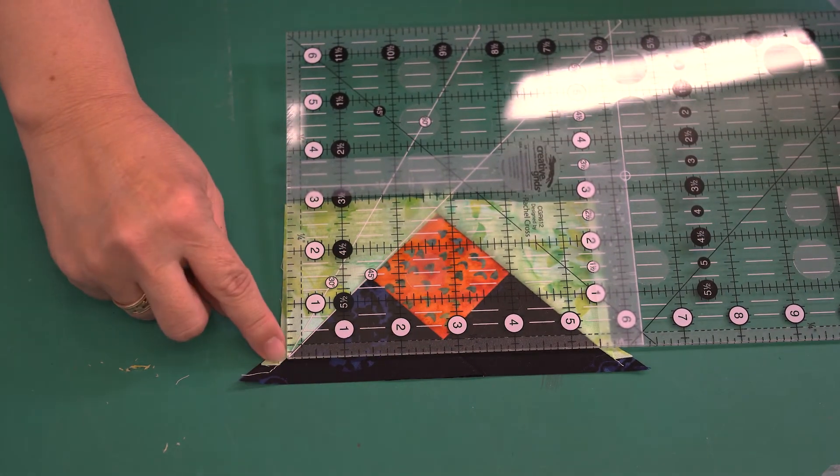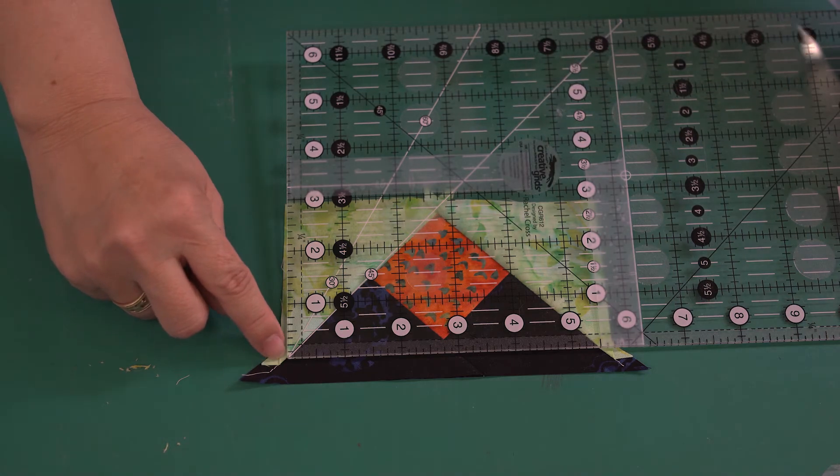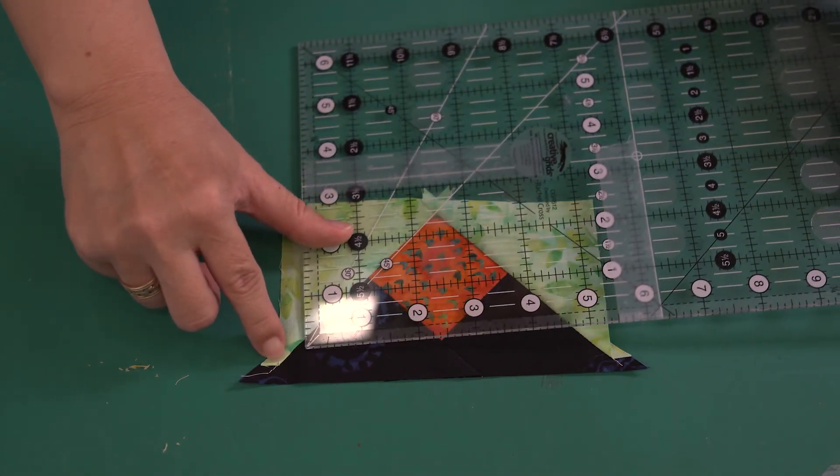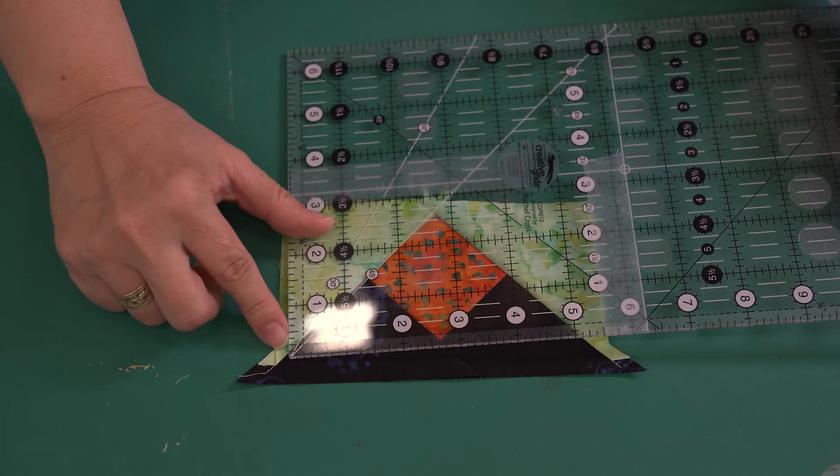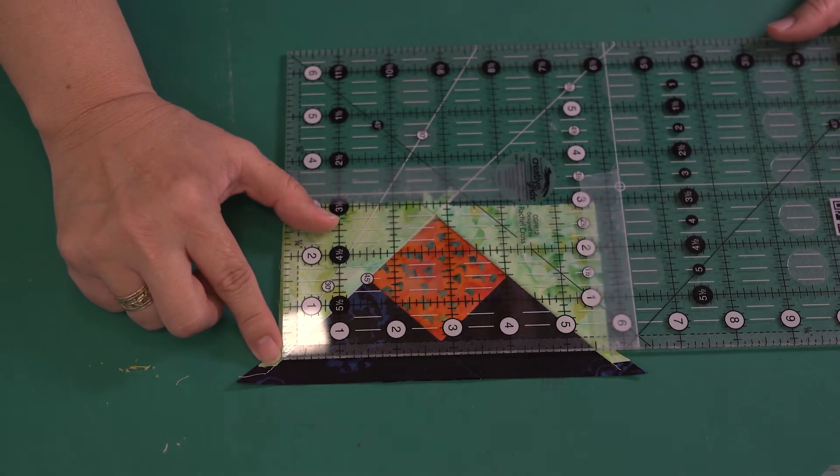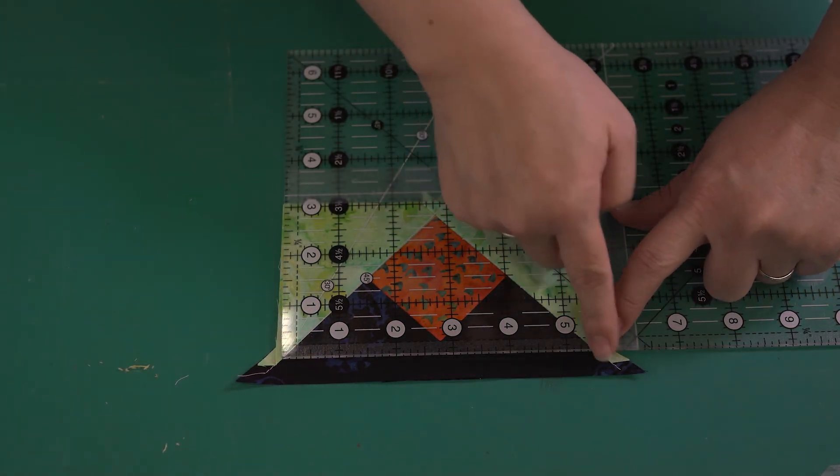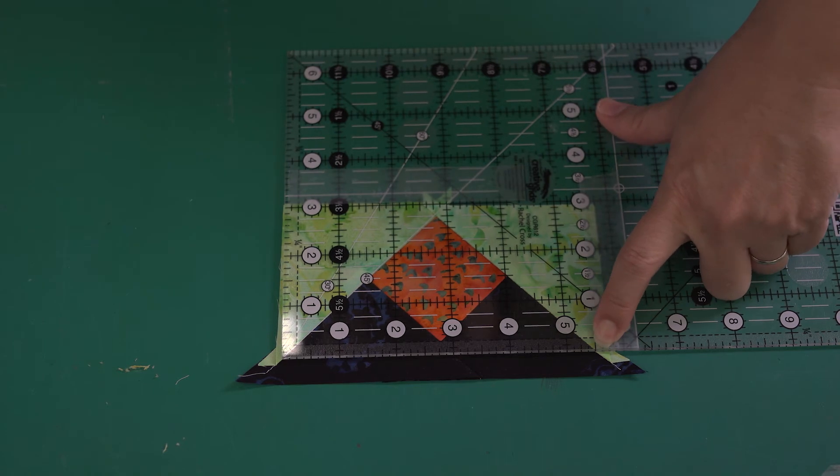I'm going to place the tip of this corner along this seam. I'm going to find the five and a half point and lay that exactly along the side on that seam.